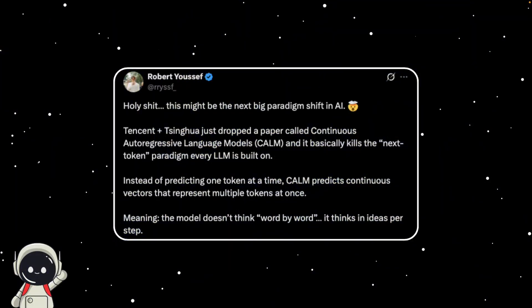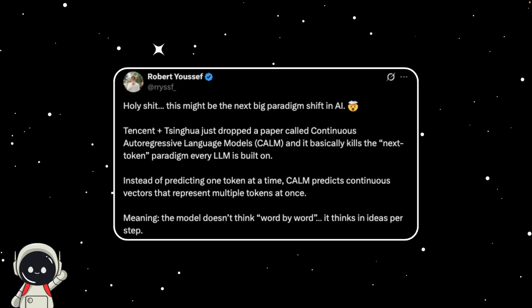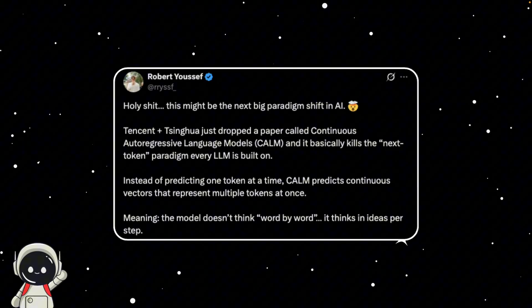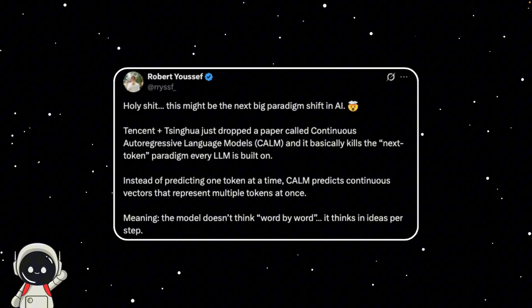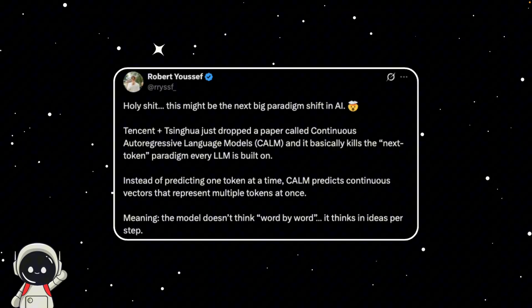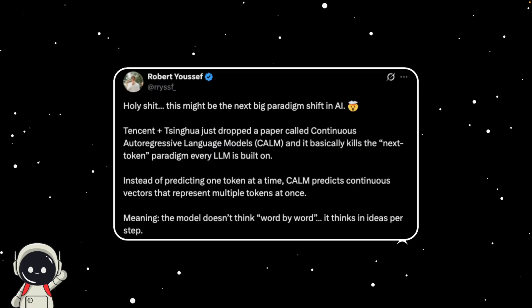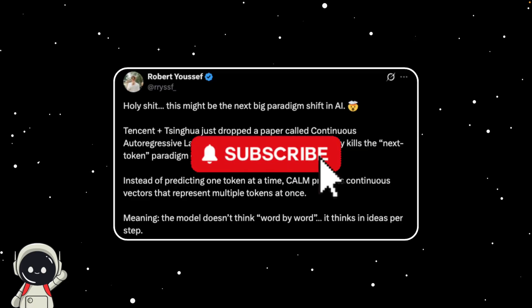Have you ever wondered why AI tools like ChatGPT sometimes take a few seconds to finish a sentence, almost like they're typing one word at a time? That's not just for effect, it's actually how these models think. They generate text piece by piece, predicting the next tiny bit of text over and over again. It works, but it's painfully slow and super expensive to run at scale.